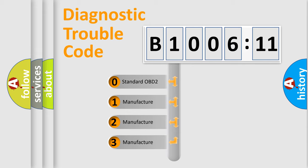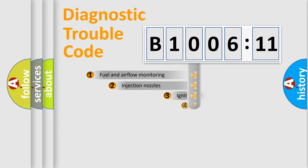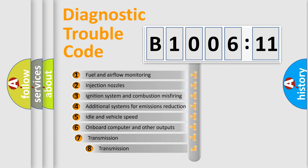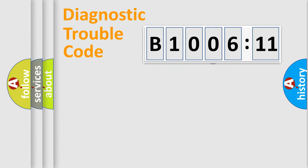If the second character is expressed as zero, it is a standardized error. In the case of numbers 1, 2, or 3, it is a manufacturer-specific error. The third character specifies a subset of errors. The distribution shown is valid only for the standardized DTC code. Only the last two characters define the specific fault of the group.